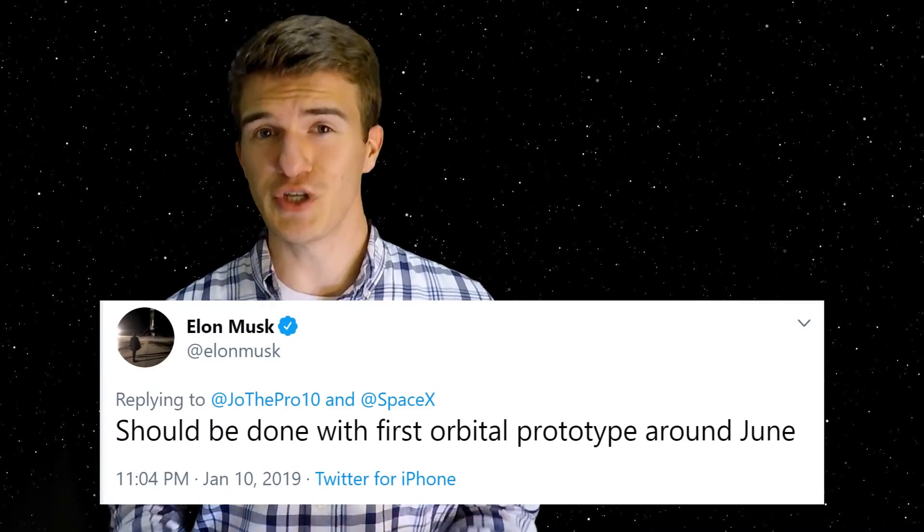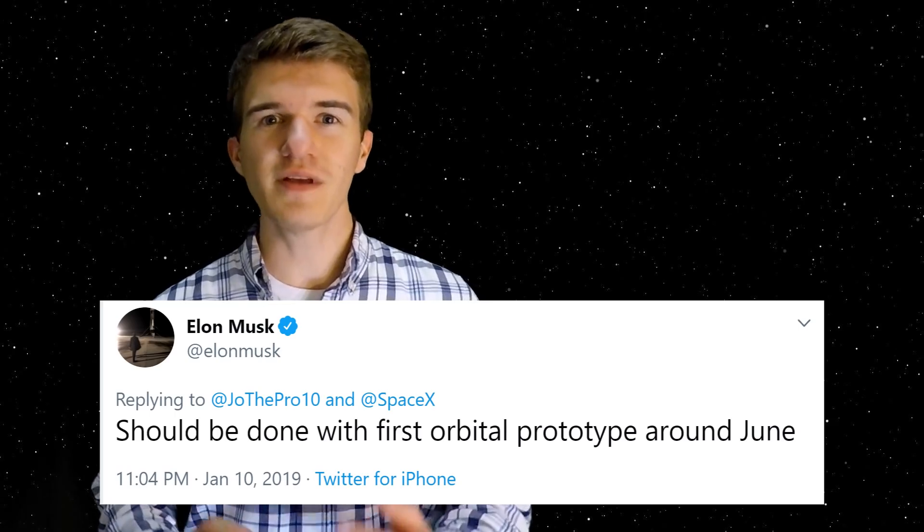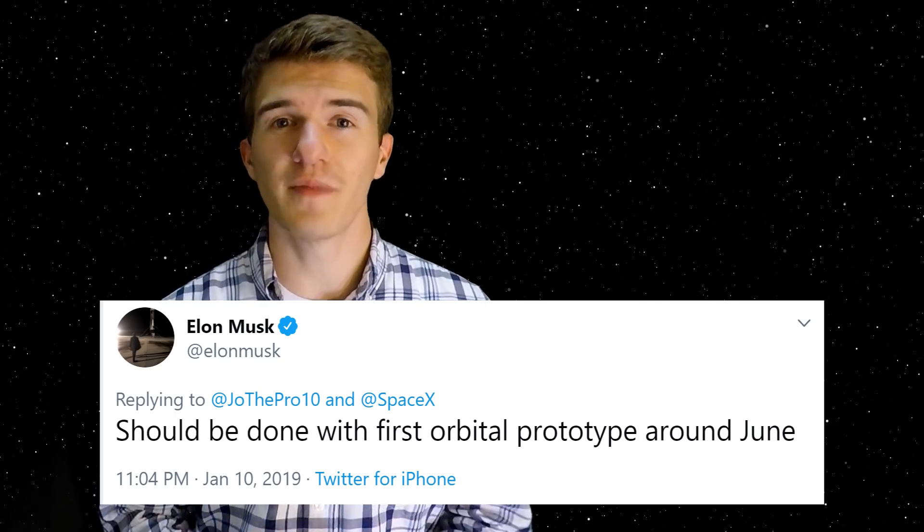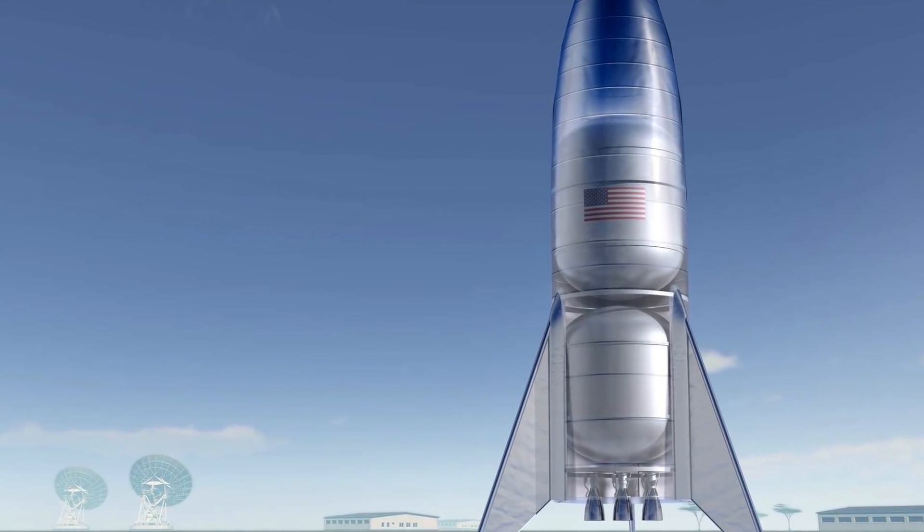Interestingly enough, back in January, Elon Musk said that the first test of Starship orbital prototype could actually take place in June of this year. There's been some images taken of the development happening at Boca Chica, but it's not so sure whether or not they'll meet that deadline. But it's more than likely that this could happen by the end of 2019, or we could see higher altitude hops, maybe hundreds of meters or potentially even a thousand meters.